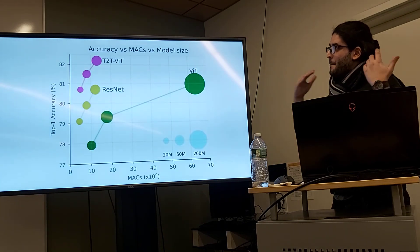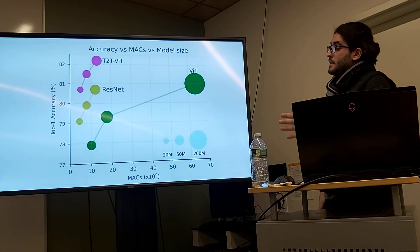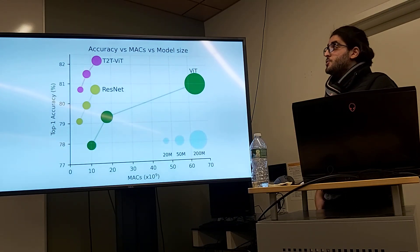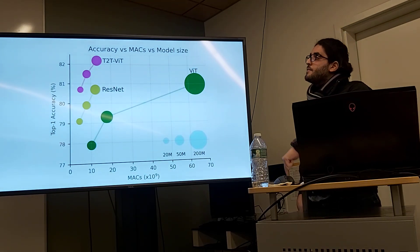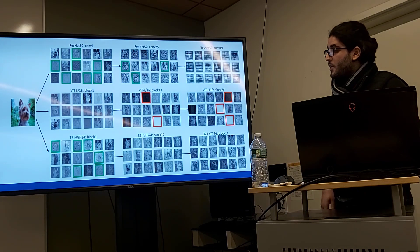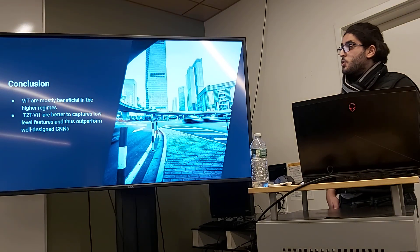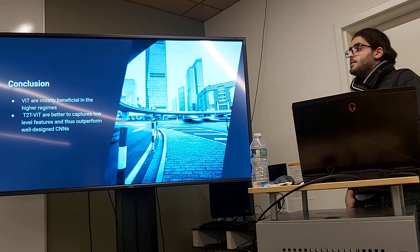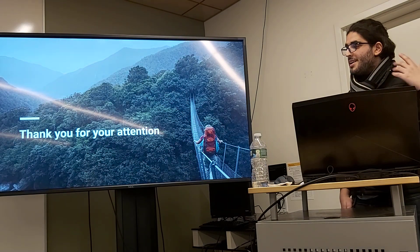Looking at the results for the T2T Vision Transformer: in the mid and low data regime, T2T does not need pre-training and outperforms CNNs and the original Vision Transformer directly. From the very first layer, we can see learned structural features shown in the green boxes. As a conclusion, Vision Transformers are mostly beneficial in high data regimes, while T2T Vision Transformers better capture low-level features and outperform well-designed CNNs. Thank you for your attention.